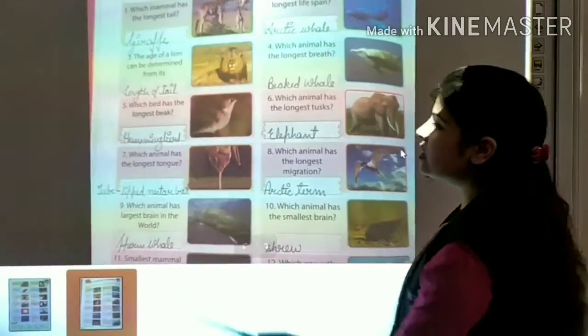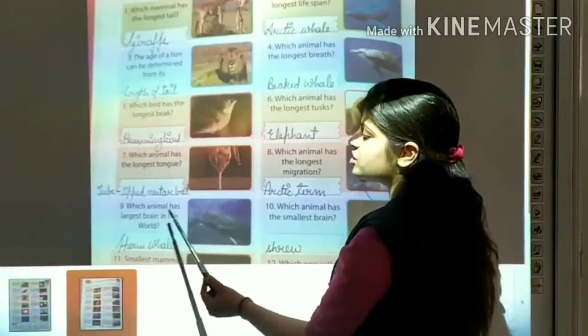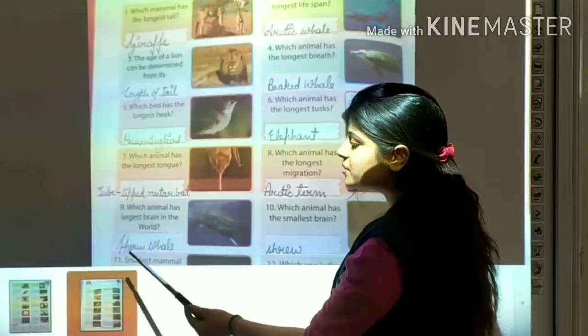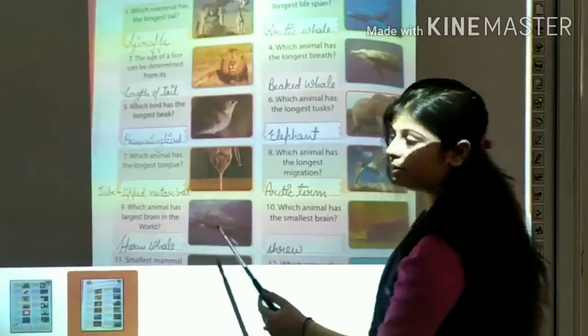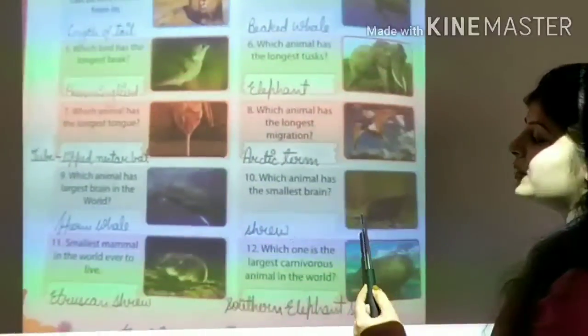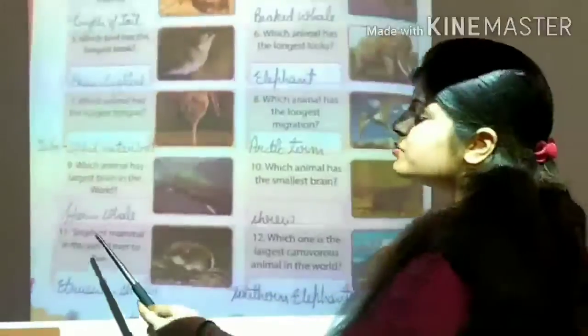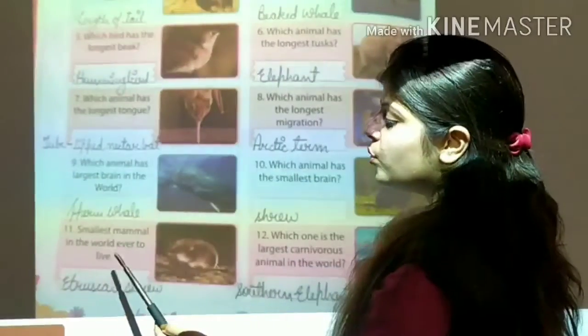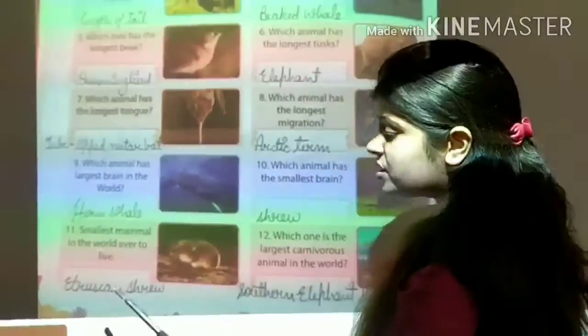Next question is, which animal has the largest brain? It's sperm whale. Next question is, which animal has the smallest brain? It's shrew. Smallest mammal in the world? It's Etruscan shrew.